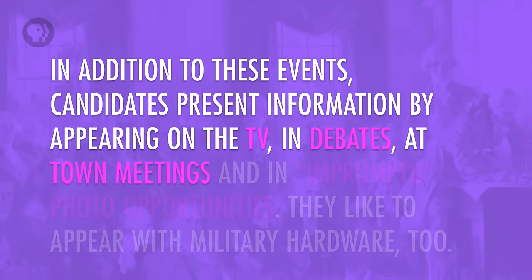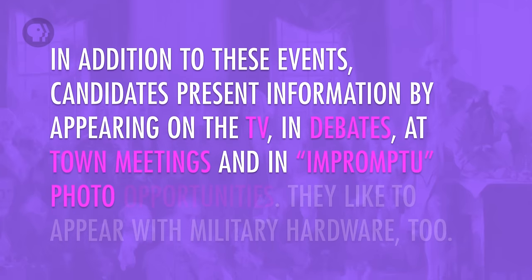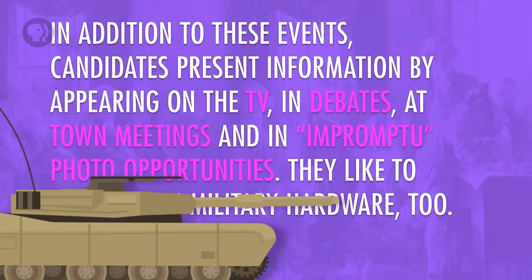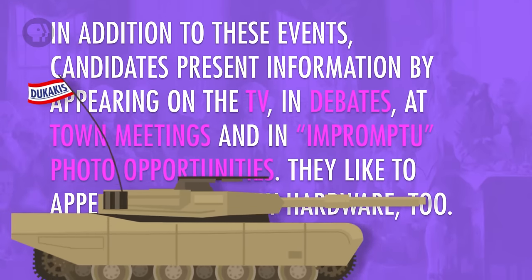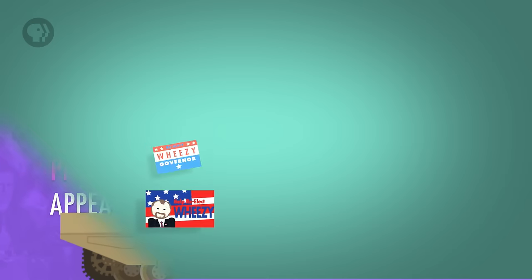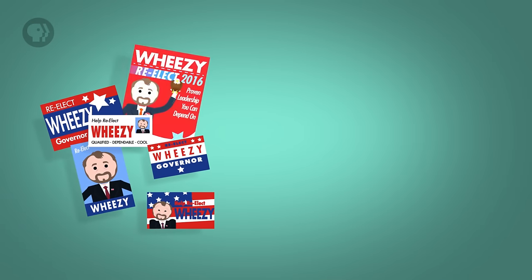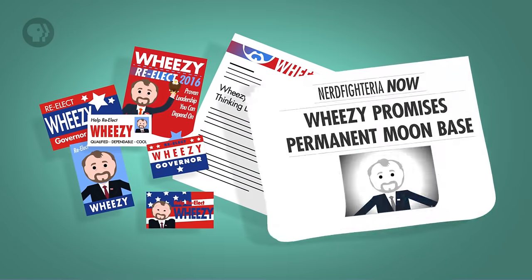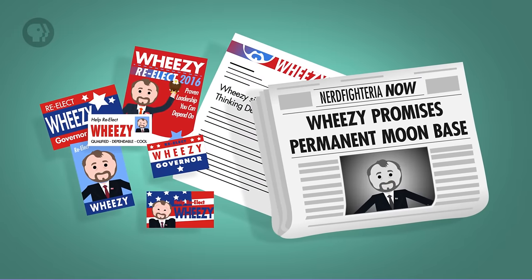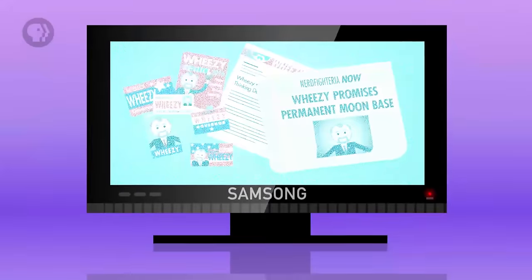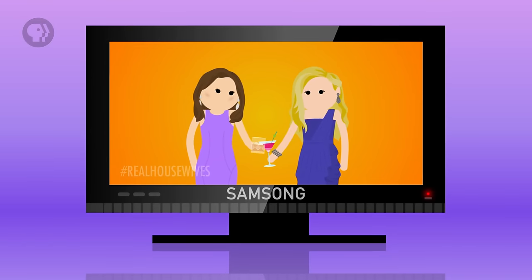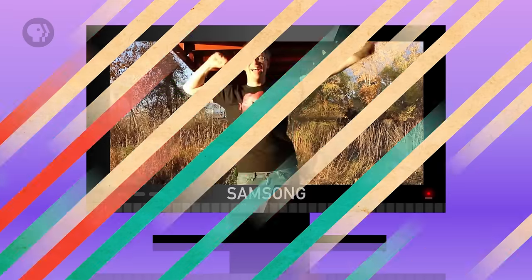Candidates present information by appearing on TV, in debates, at town meetings, and in impromptu photo opportunities. They like to appear with military hardware, too, although sometimes this can backfire, as in the case of Michael Dukakis in 1988. Campaigns can spread their messages through direct mail, press releases, news coverage, and through advertisements, often on TV — which is like the internet, only less interactive, and has a lot of Real Housewives on it.